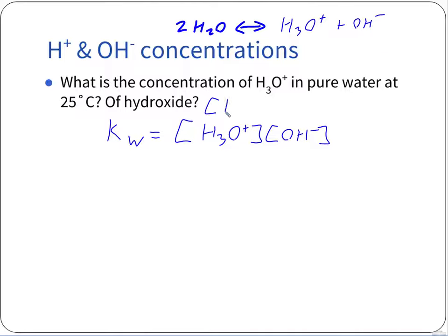Remember that our concentration of hydronium and our concentration of hydrogen ions is the same, so we can substitute that in. This product is always going to be equal to KW, and at 25 degrees Celsius, KW is going to be 1 times 10 to the negative 14th.